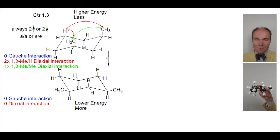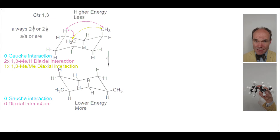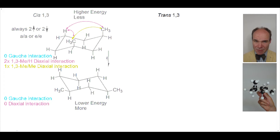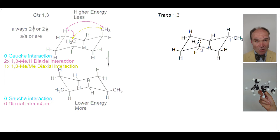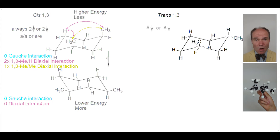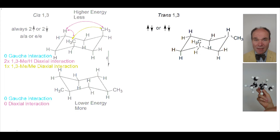Moving from CIS-1,3-disubstitution to TRANS-1,3-disubstitution. TRANS tells us that the two methyl groups are on opposite sides of the ring, so if we draw a horizontal dotted line through the ring carbon, one of the methyl groups will be above (up from the line) and the other will be below (down from the line).